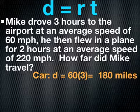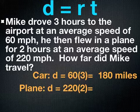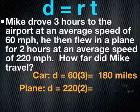And this, we're talking about miles because it was miles per hour. It says then he flew in a plane for 2 hours at an average speed of 220 miles per hour. To find the distance that he traveled in the plane, I need to take 2 hours times the 220 miles per hour, the rate. And I find that he flew 440 miles.